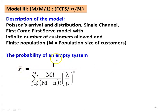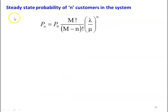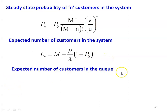The probability of an empty system: P0 = 1 / [Σ (n=0 to M) of M! / (M−n)! × (λ/μ)^n], where λ is the mean arrival rate, μ is the mean service rate, and n varies from 1 to M. The steady-state probability: P_N = P0 × M! / (M−N)! × (λ/μ)^N. The expected number of customers in the system: L = M − (μ/λ)(1 − P0). The expected number in the queue: Lq = M − [(λ+μ)/λ](1 − P0).